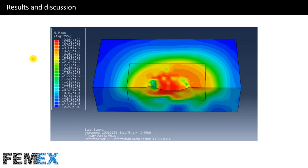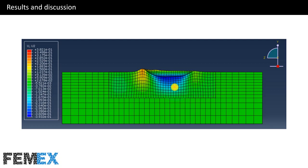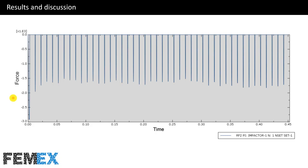This is the von Mises stress contour at time equal to 0.45 seconds. This is part 1 and this is part 2, and here you can see the deformation. And this is the mesh of the model. Here we have the contour of displacement in the Y direction, and here you can see the deformation. This is the impact force curve versus time. The impact force of the first impact is very much larger than the other impact forces, and here you can see a periodic behavior.